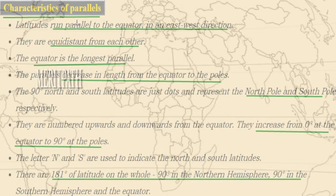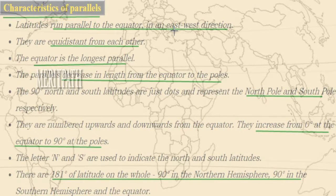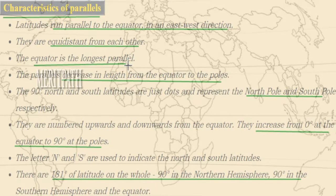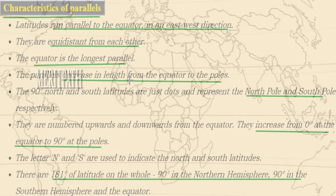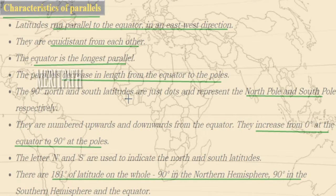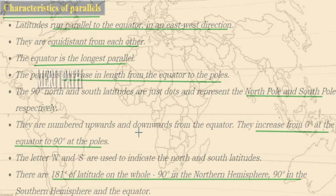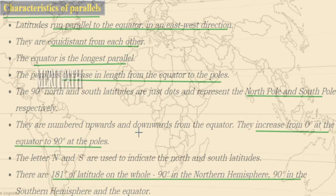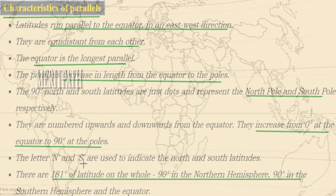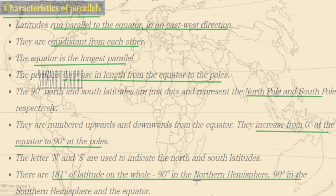Latitudes run parallel to the equator in an east-to-west direction and are always equidistant from each other. The equator line is the longest parallel line, and these parallel lines decrease in length from the equator to the poles. The 90 degrees north and south latitudes are known as the North Pole and South Pole. Latitude lines are numbered upward and downward from the equator — from 0 degrees up to 90 degrees at the poles.